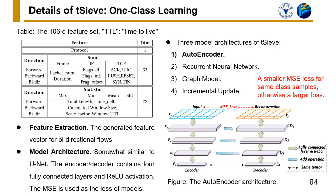The first component, sieve, maintains a series of one-class learners for known classes. It provides three model architectures. The first is autoencoder, which is similar to U-Net. It performs encoding and decoding to learn features generated from bi-directional flows so as to identify the corresponding classes' samples.